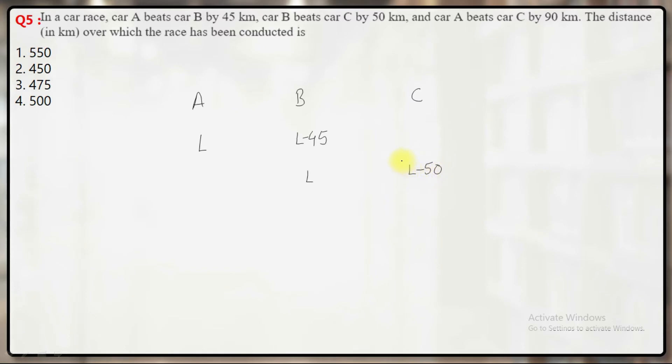And the third part says that car A beats car C by 90. That means by the time A covers L, C will cover L minus 90.